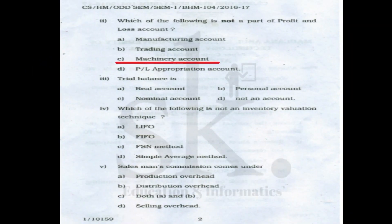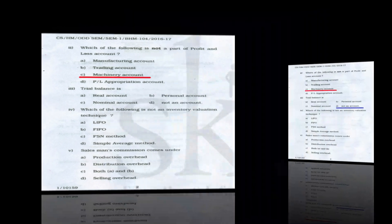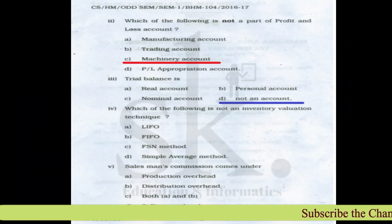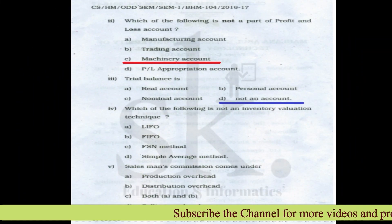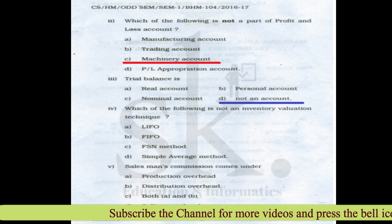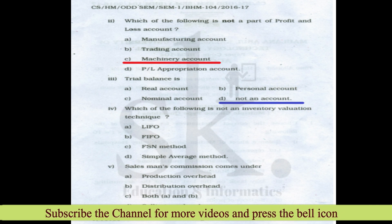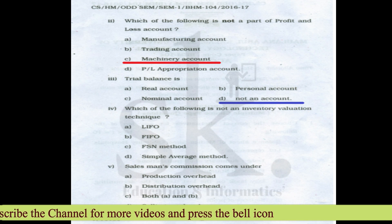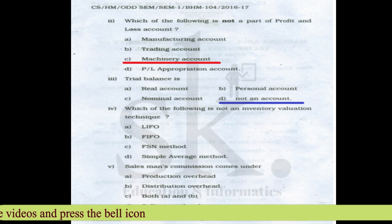The correct option for question two is C. Question number three: which of the following is not an account — a trial balance is basically a statement, not an account. The correct option is D. Question number four: which of the following is not an inventory valuation technique — FIFO, LIFO, and simple average are inventory valuation methods; FSN relates to movement of goods, not valuation. The correct option is C.